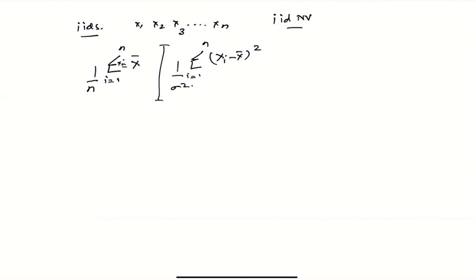So these two things that you have obtained from the IID normal variables, they are also independently distributed. While this one has a normal distribution, this one has a chi-square distribution, and they are independent.